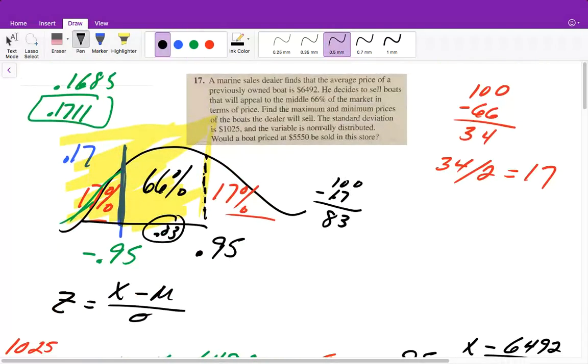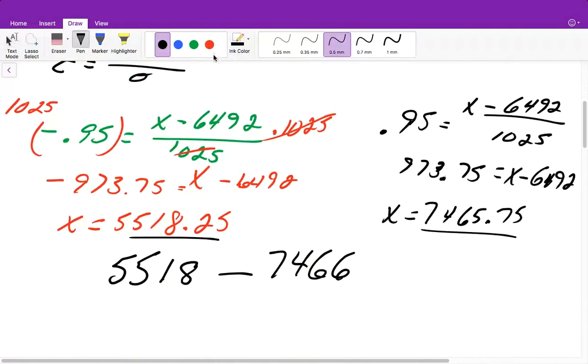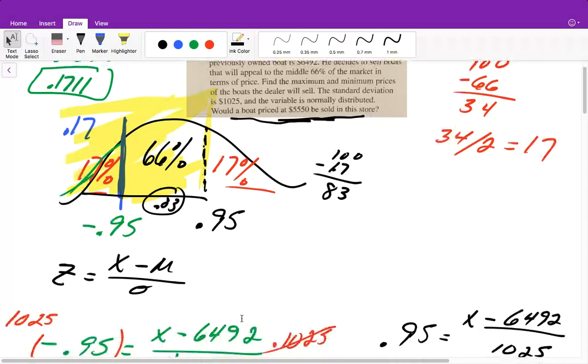It then says would a boat priced at $5,550 be sold in the store? So that means that $5,550 would have to be in this range. And since it is, because it's greater than $5,518, that means yes, it would be sold in the store because it is part of the middle 66%. That's it for that question.